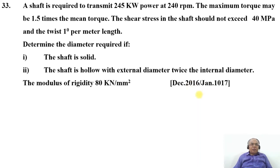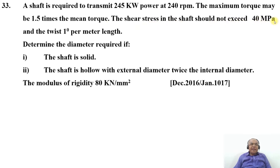In this video we are going to take up one more problem on shafts — problem number 33. A shaft is required to transmit 245 kW power at 240 rpm. The maximum torque may be 1.5 times the mean torque. The shear stress in the shaft should not exceed 40 MPa and the twist 1 degree per meter length. This problem was asked in December 2016 and January 2017.